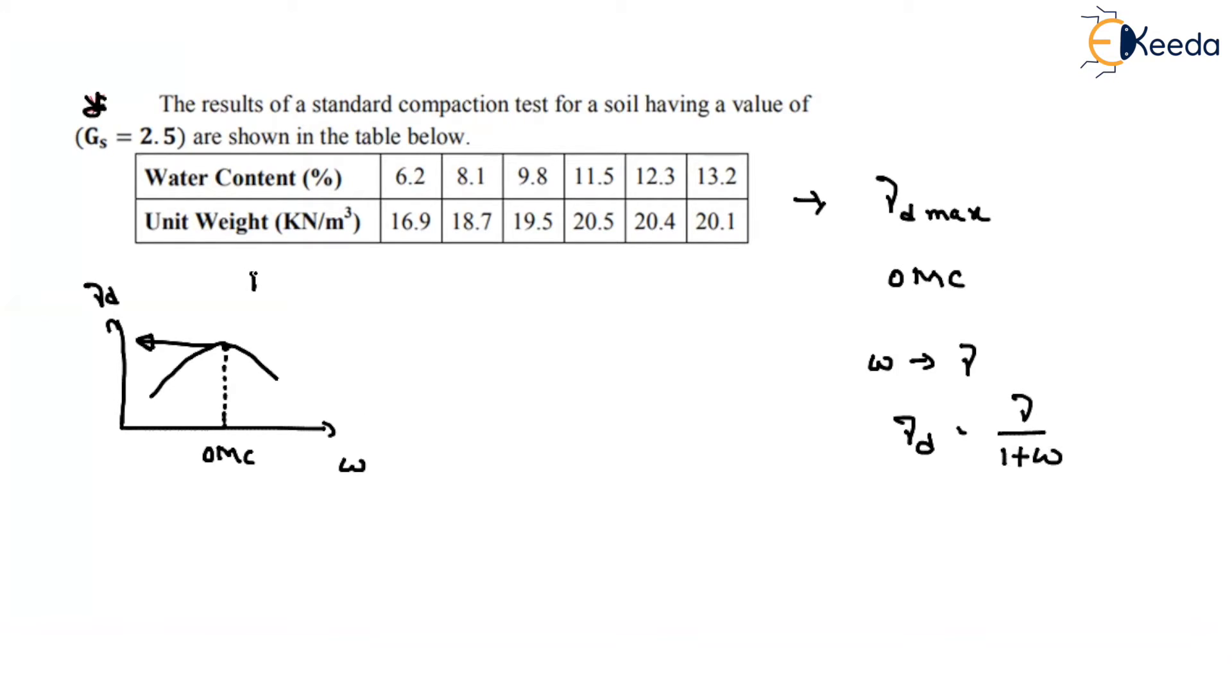So let me write down. Here I am writing the gamma_d values. So 16.9 divided by 1 plus 0.062, you are getting around 15.9. For the 8.1 water content, you are getting around 17.3. For water content 9.8, you will get the value 18.4.